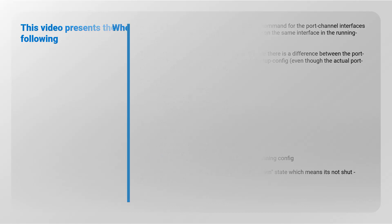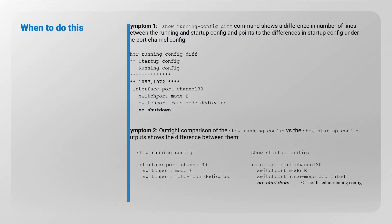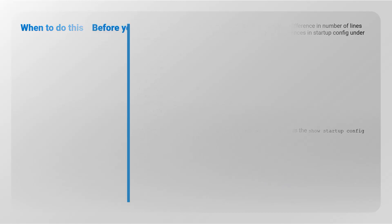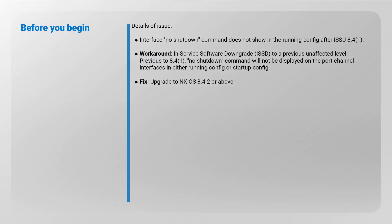When to act: Symptom 1 - the show running config difference command shows a difference in number of lines between the running and startup config, pointing to differences in startup config under the port channel configuration. Symptom 2 - an outright comparison of show running config versus show startup config outputs shows the difference between them.